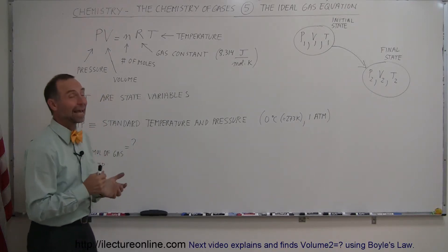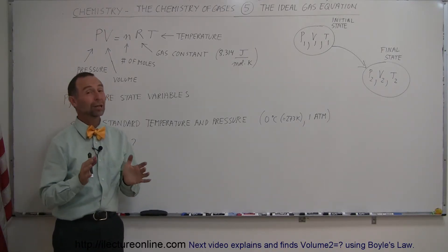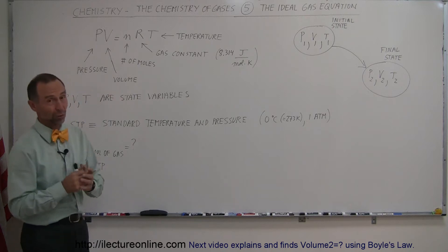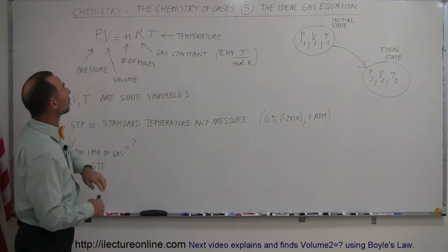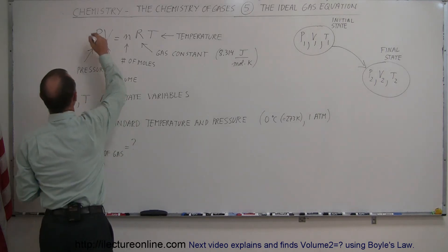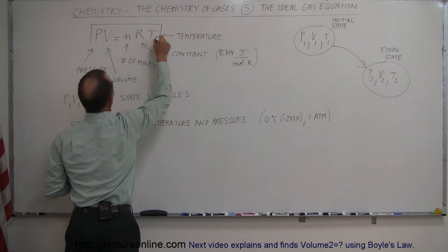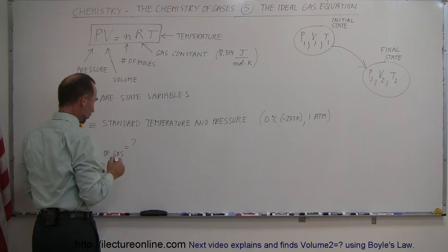Here we're going to talk about the ideal gas equation. It's a really important equation in chemistry, especially when you want to talk about gases. The equation is PV equals nRT, and we should really put a box around this one because it's important in so many ways.